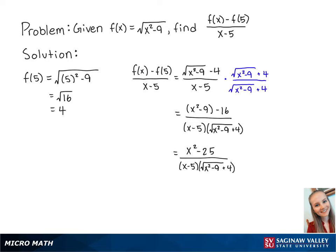Now we can factor out the top to be x plus 5 times x minus 5 all over x minus 5 times the square root of x squared minus 9 plus 4.